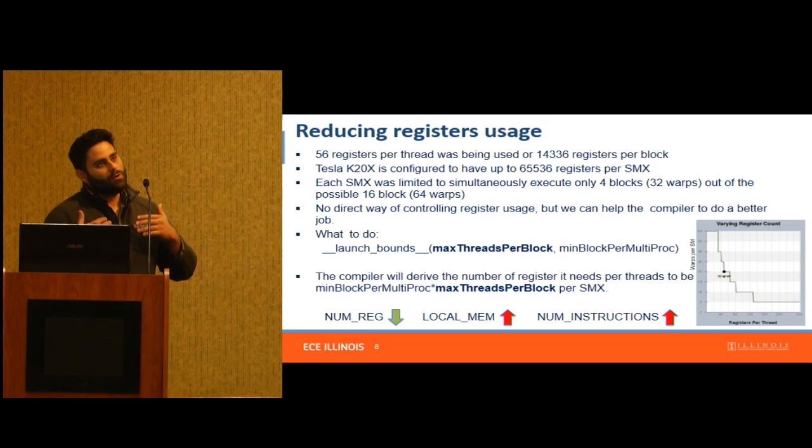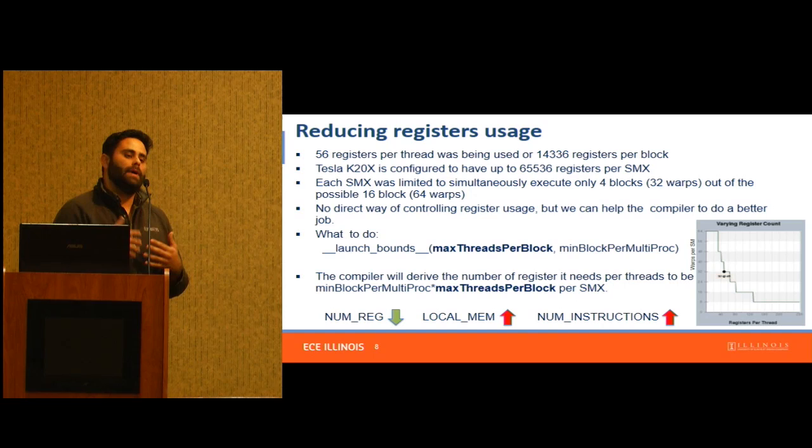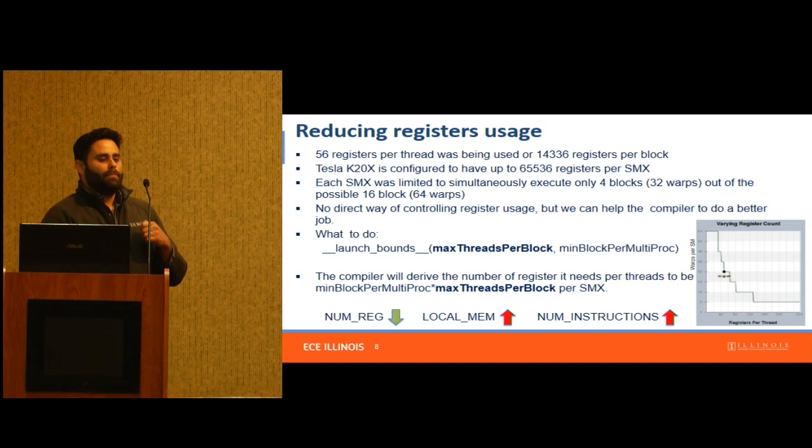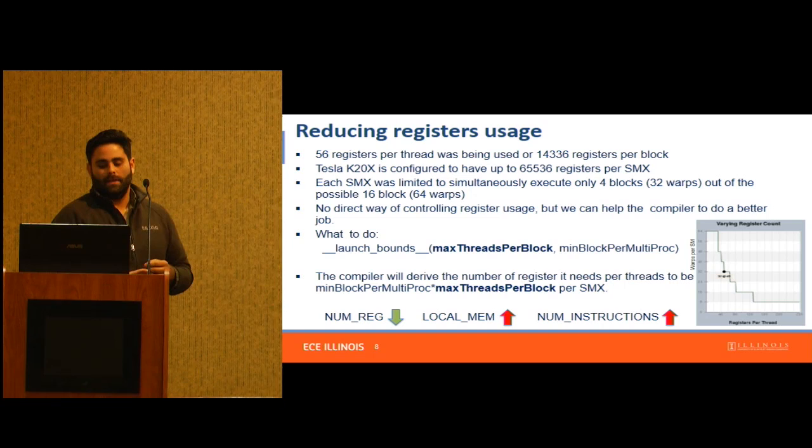So what do you do in this case? You can't really control register usage by yourself — this is a step the compiler takes, doing some interesting arithmetic to balance the number of registers each thread gets versus available resources. But the compiler doesn't have all the information available to it, so you can give it hints using some of the CUDA API.